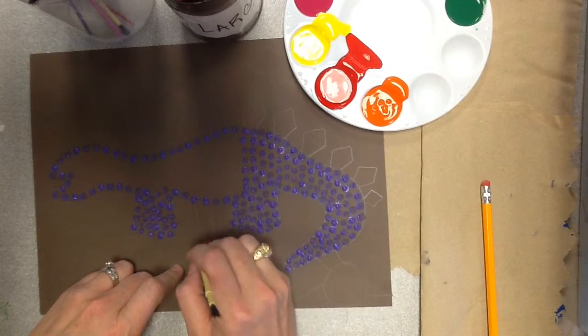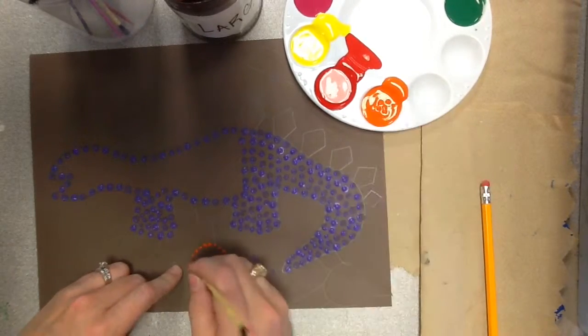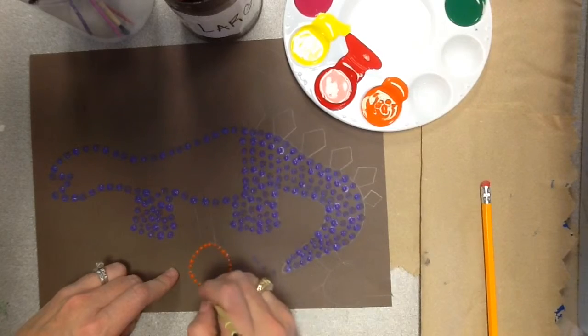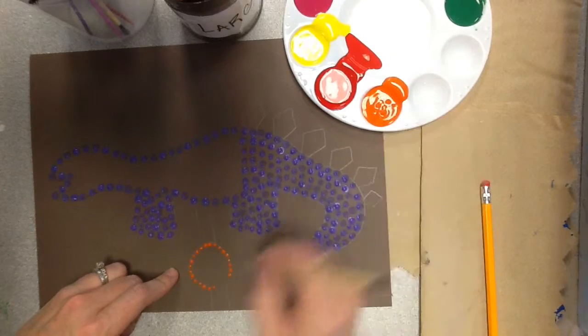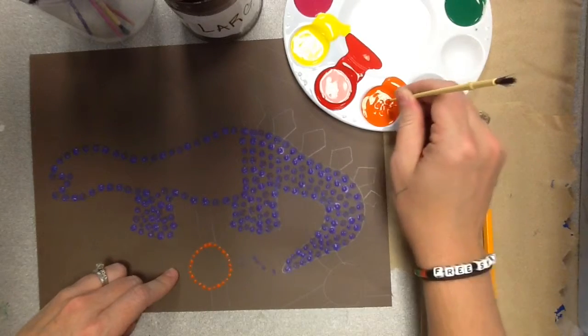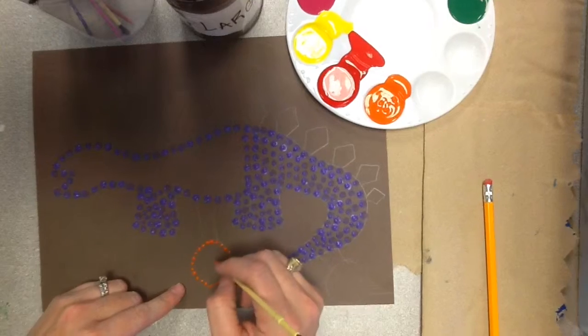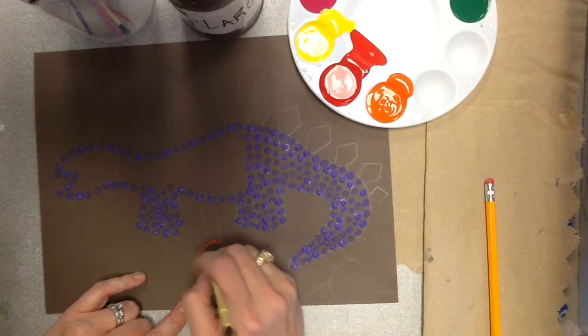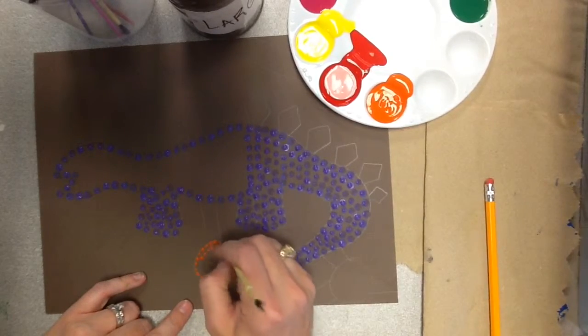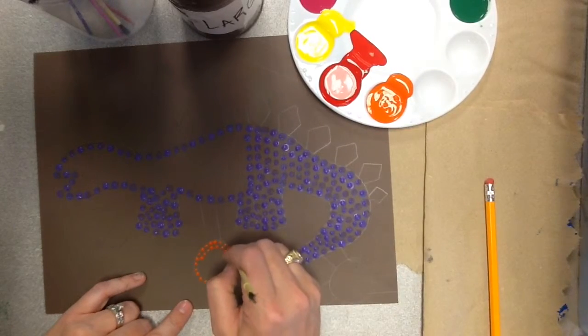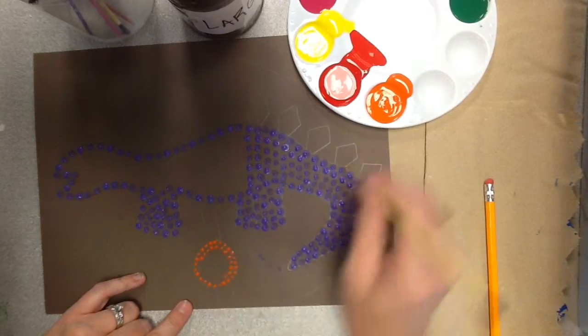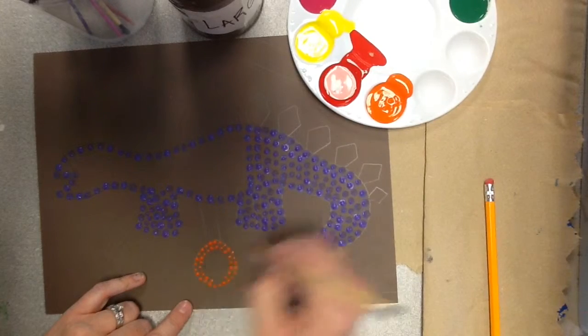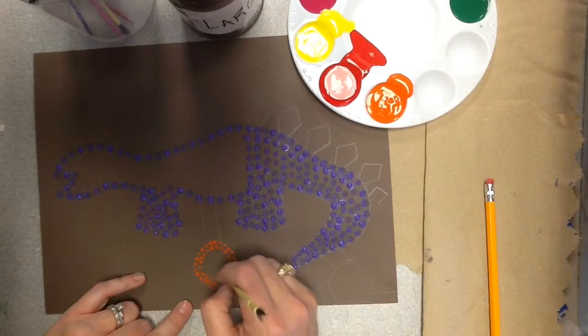I actually kind of like the smaller dots a little better than the bigger dots. It might take longer, but I think it looks really cool. Okay, so once you've outlined it, you could fill it in with another color if you wanted to, or you could continue with that same color. So I'm just going to go in a circle again around the whole circle, and fill in with more orange dots. These look really cool.